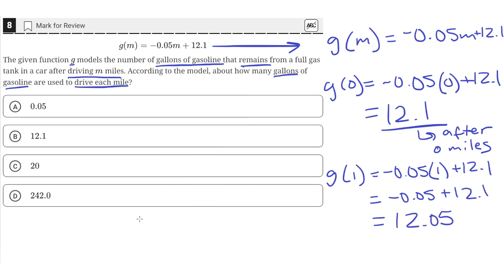So we went from 12.1 gallons to 12.05 gallons. The difference in the amount is given by subtracting 12.05 from the initial amount. So in total, we lost 0.05 gallons of gasoline when we drove one mile. Since this is a linear equation, every mile takes up 0.05 gallons of gasoline.